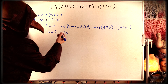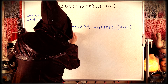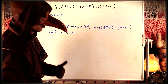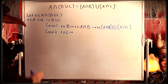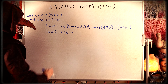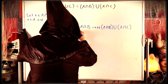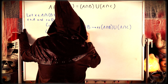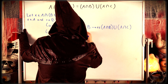If x is an element of C, same sort of thing — we're guaranteed that x is an element of A. So if x is an element of C, then x is an element of A intersect C by definition of set intersection.